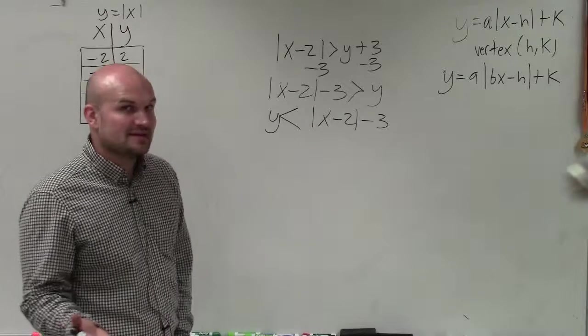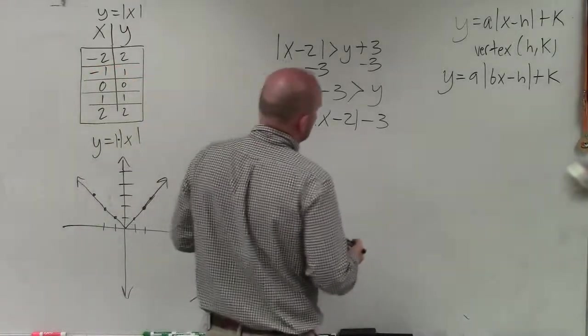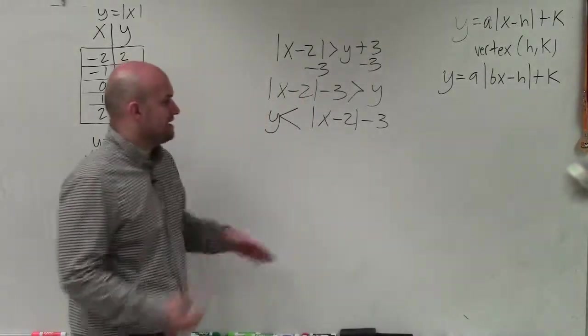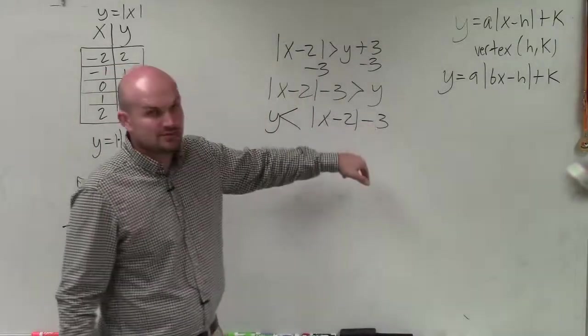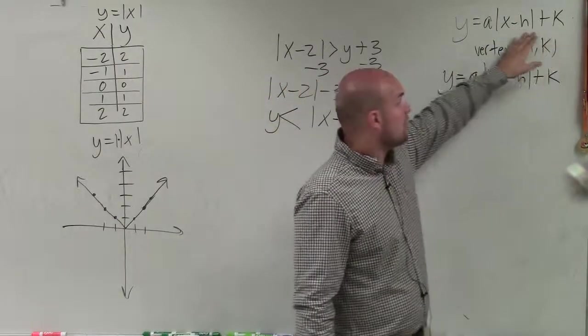So now I can graph this. But before I graph it, I've got to understand what are my transformations that are happening to my graph. And I notice I have an x minus 2 minus 3. Well, that is going to be represented as our h and our k for our transformations.